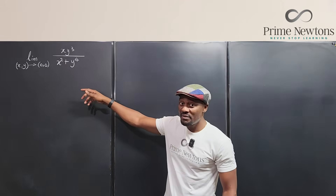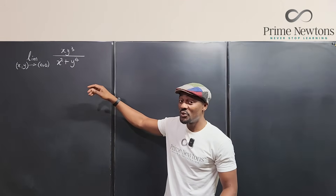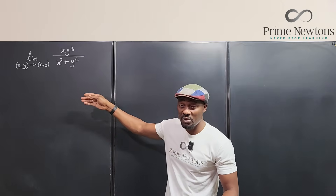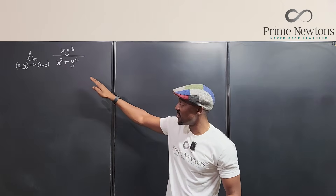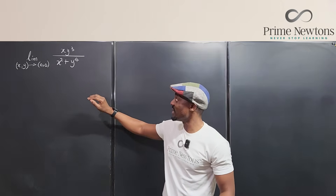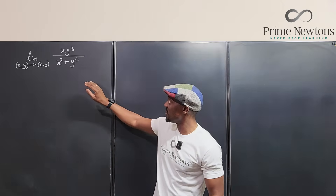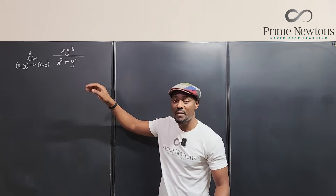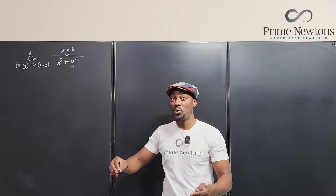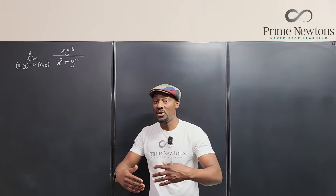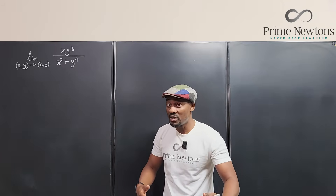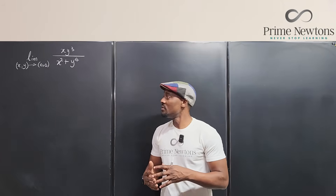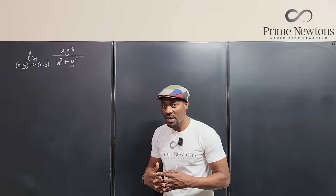In multivariable calculus we cannot use L'Hôpital's rule when we have an indeterminate form, because if you plug in zero for x and y everywhere you're going to get zero over zero. So we have to resort to either factoring, algebraic manipulation, or we might have to switch to polar coordinates.